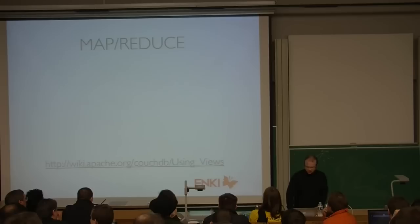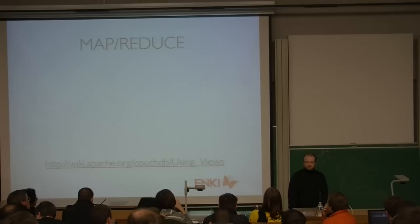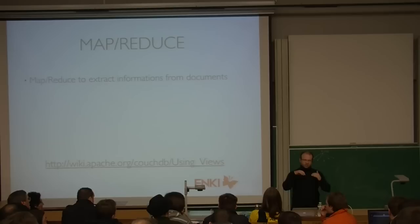Once you have saved your documents in CouchDB, you need to query them. CouchDB is based on MapReduce, a concept developed by Google. CouchDB uses its own implementation of the MapReduce system — it's not patented, completely free, and was reviewed by the Apache Foundation. We use MapReduce to extract information from documents.